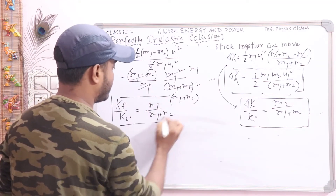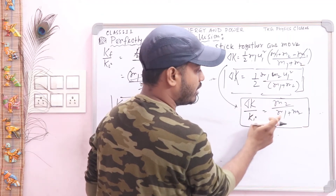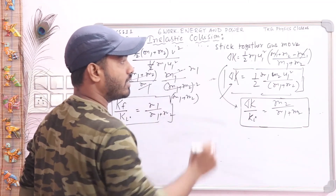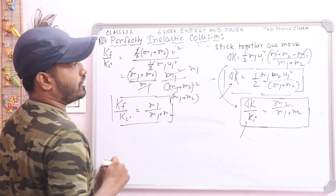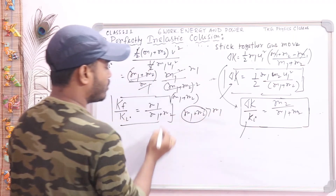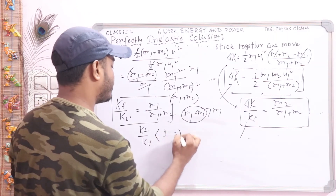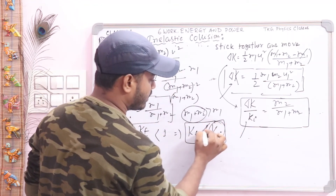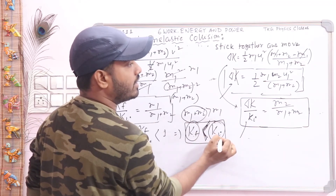From this result: the ratio K_final/K_initial = m1/(m1 + m2), the fractional KE loss ΔK/K_initial = m2/(m1 + m2). Since (m1 + m2) is greater than m1, the ratio K_final/K_initial must be less than 1, which means K_final < K_initial. This proves that the initial kinetic energy is greater than the final kinetic energy in a perfectly inelastic collision.